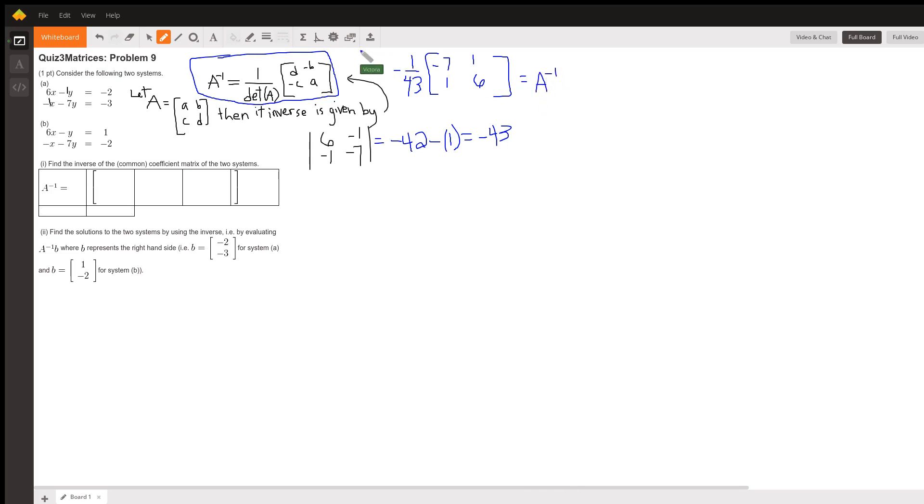The one they're looking for in the problem. Now we're supposed to be finding a solution to the system, and we do that by multiplying the inverse times the solution vector. For A we have one solution vector and for B we have another.